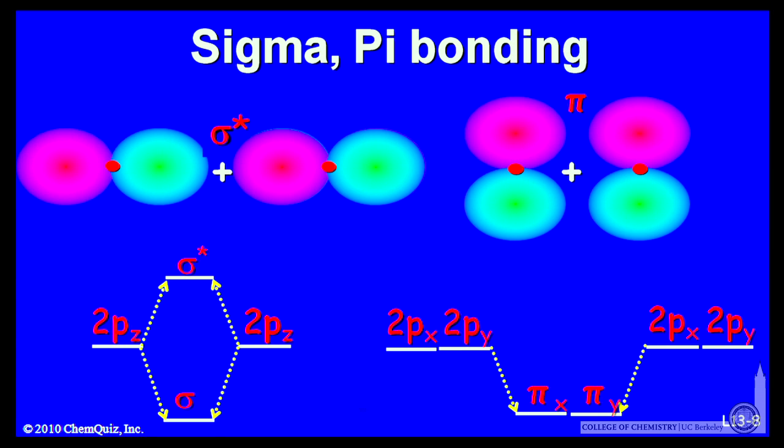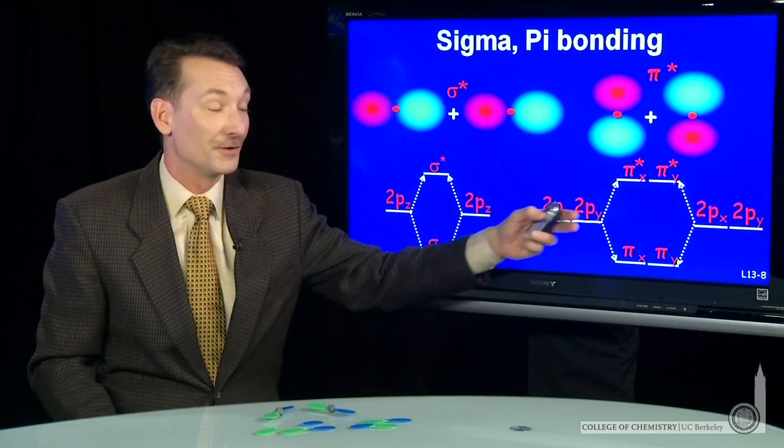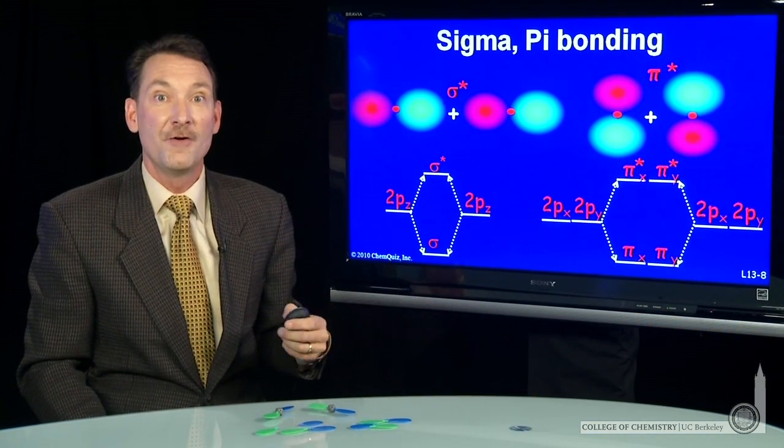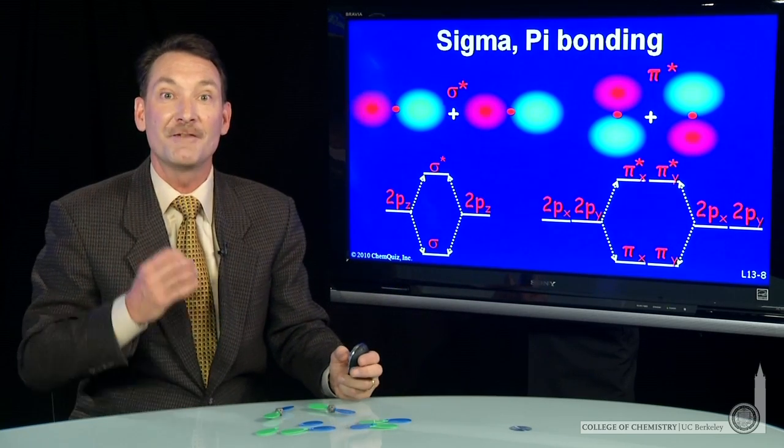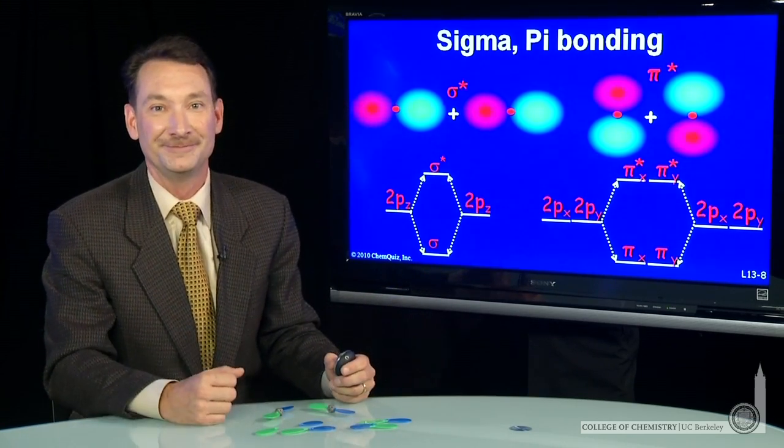Those are the pi orbitals and sigma orbitals formed from linear combinations of atomic p orbitals.